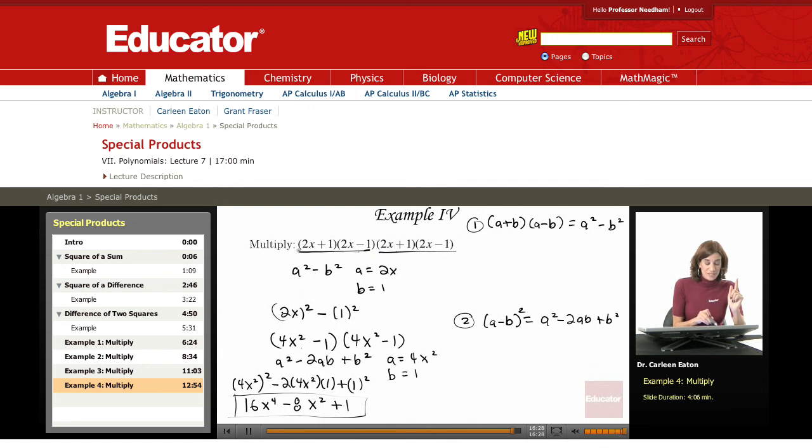I recall, though, that I had this twice, the product of this. So I had 4x squared minus 1 times 4x squared minus 1. And this is the square of a difference, a minus b squared.